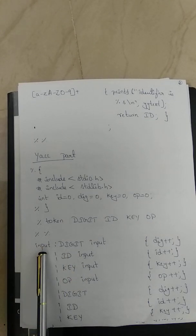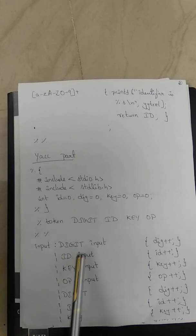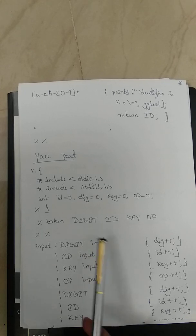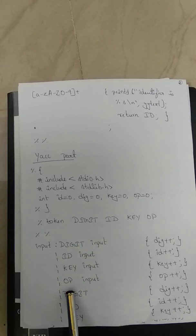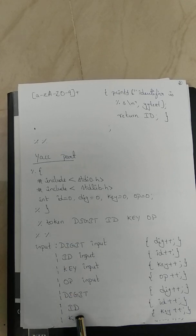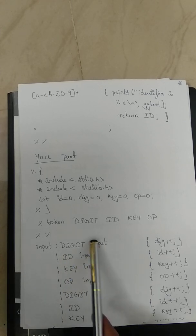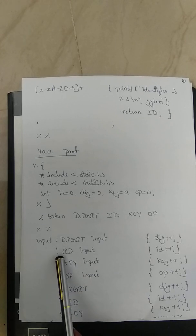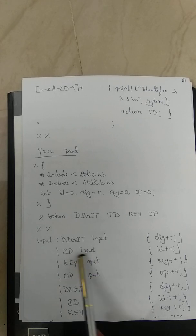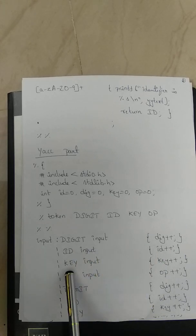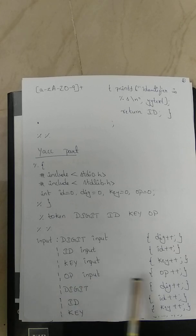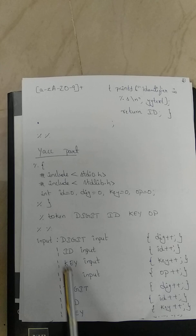In the rule section, production rules are written. 'input' is a non-terminal. In a C program we may encounter a digit followed by input, or id followed by input, or keyword followed by input, or operator followed by input. To handle all possibilities, the grammar is written properly. When DIGIT is encountered, increment the digit variable; when ID is encountered, increment the identifier variable; similarly for KEY and OP.